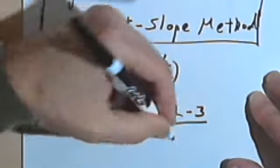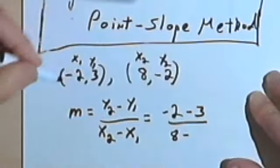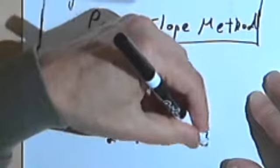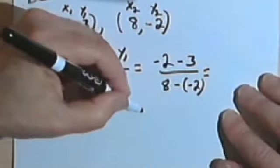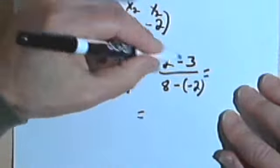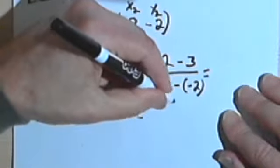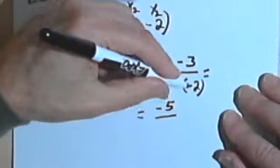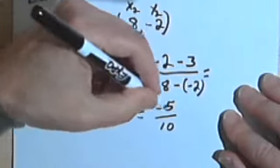And then I'll take the x sub 2, which is 8, and subtract x sub 1, which is negative 2. Do my subtraction. I get negative 2 minus 3 is negative 5. And 8 minus negative 2 is the same as 8 plus 2. So that's 10.